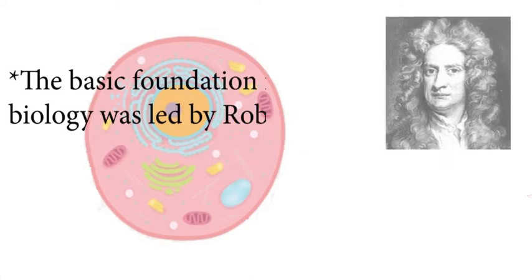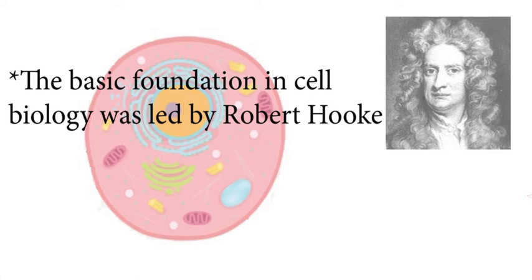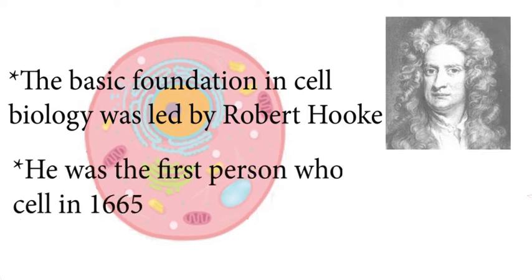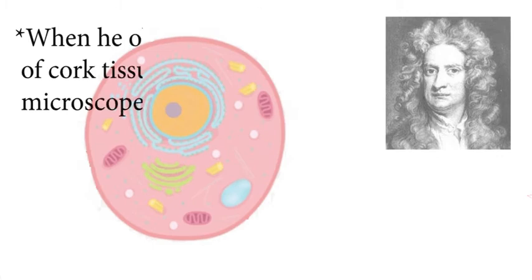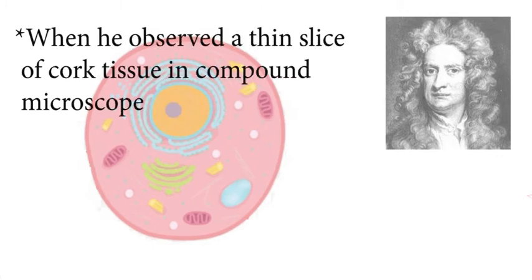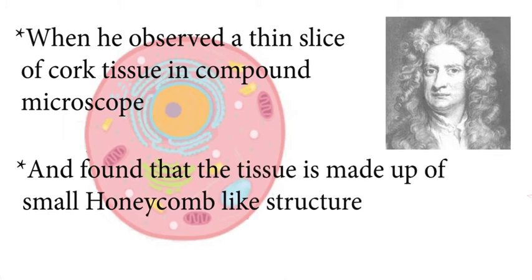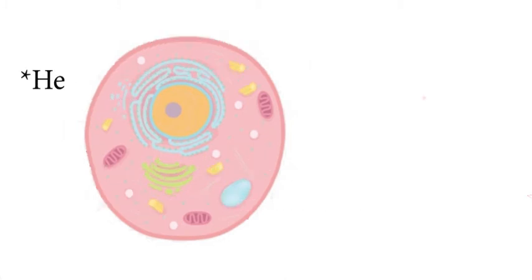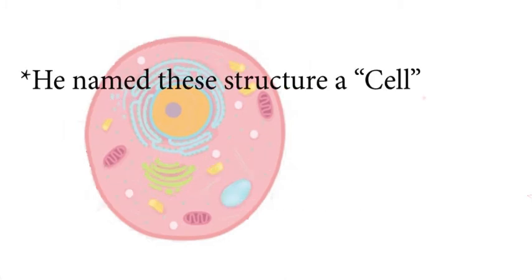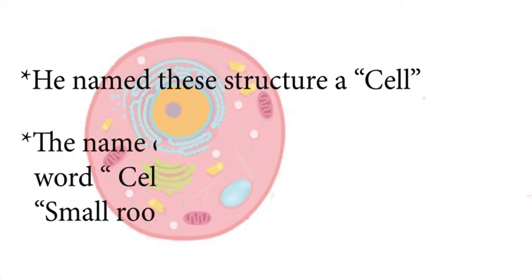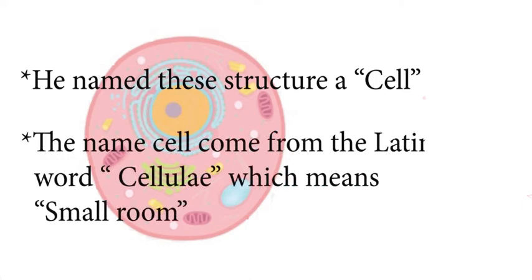Now let's move to the discovery of cell. The basic foundation in cell biology was led by Robert Hooke. He was the first person who discovered cell in 1665 when he observed a thin slice of cork tissue in a compound microscope and found that the tissue is made up of small honeycomb-like structures. Robert Hooke named these honeycomb-like structures as 'cell.' The name cell comes from the Latin word 'cellulae,' which means small room.